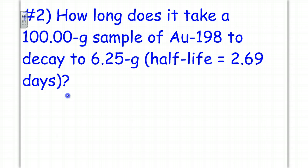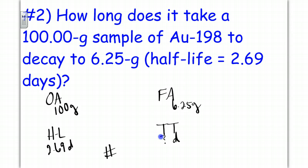How long does it take a 100-gram sample of gold-198 to decay to 6.25 grams if the half-life is 2.69 days? So we have an original amount, a final amount, the half-life, the total time, and then the number of half-lives that will occur. However, I have an original amount of 100 grams, I have a final amount of 6.25 grams, and we know the half-life is 2.69 days. So we want to find out what is the total time in days.